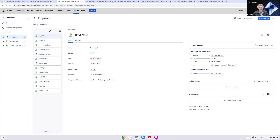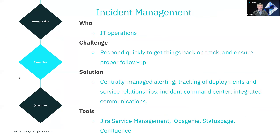We will move into the next demo: incident management. This is really for our IT operations department. The challenge is how do you respond quickly to get things back on track and ensure proper follow-up when an incident occurs? Our solution is a centrally managed alerting system, tracking of deployments and service relationships, and integrated communications. The tools we'll use are Jira Service Management, OpsGenie, Status Page, and Confluence. I'm going to go back to our help center.